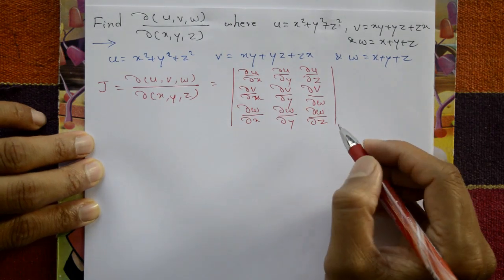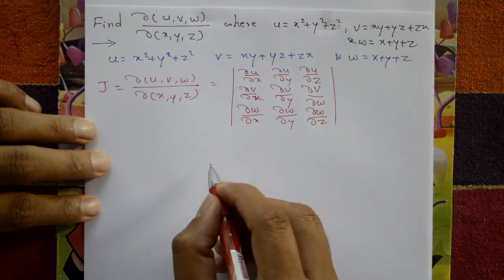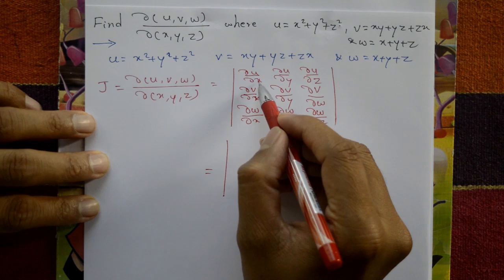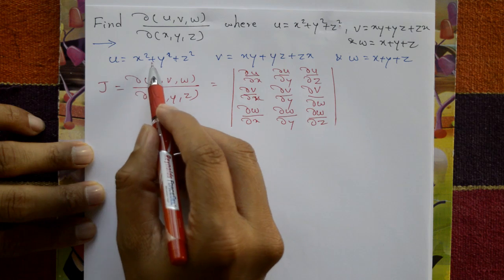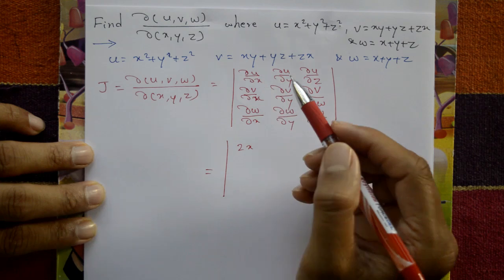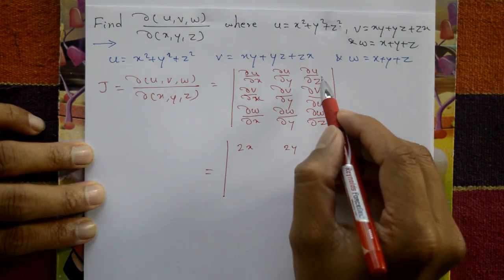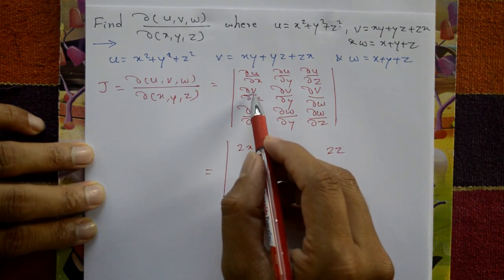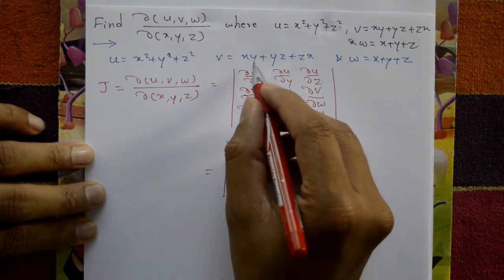Now differentiate u with respect to x — that gives 2x. Differentiate u with respect to y — that gives 2y. Differentiate u with respect to z — that gives 2z. Now for v: ∂v/∂x means only y and z terms remain, so ∂v/∂x = y + z.